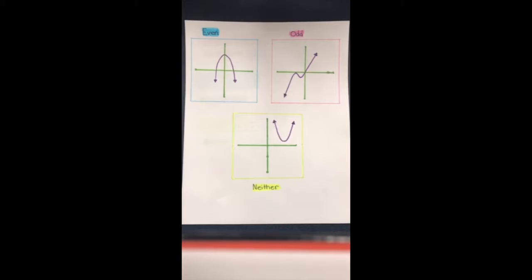Now I will explain how we can determine functions graphically. Through the even function, we can tell that the polynomial has line symmetry over the y-axis. Whereas in the odd function, we can tell that the polynomial has a point going directly through the origin, (0, 0). Whereas neither has none of these characteristics.